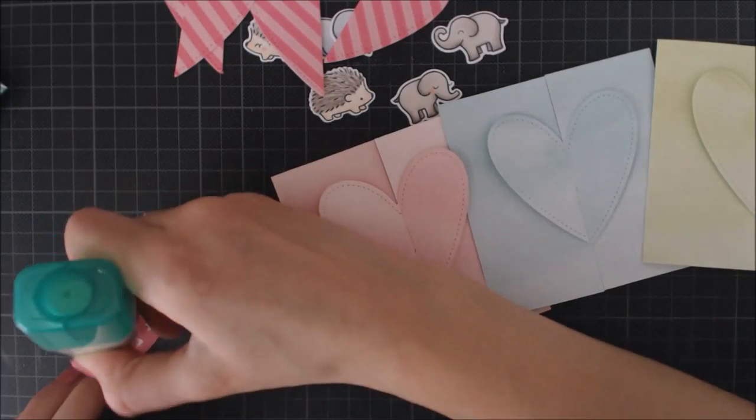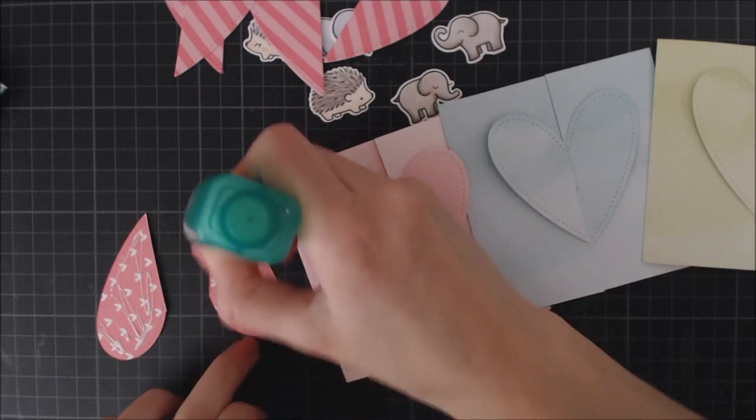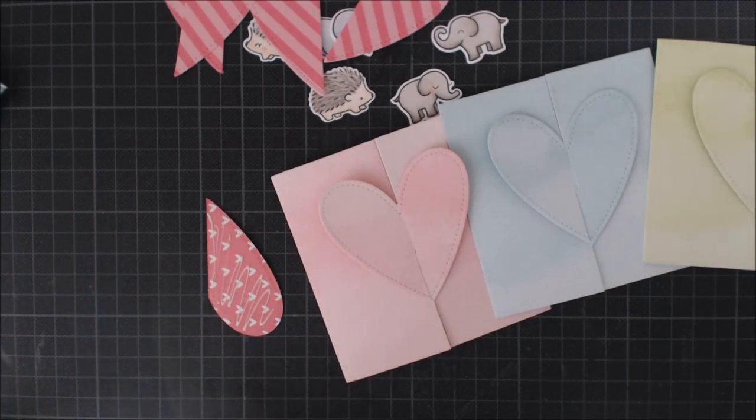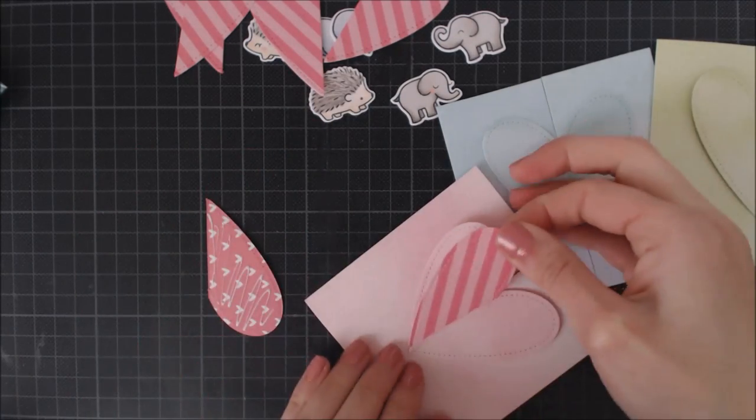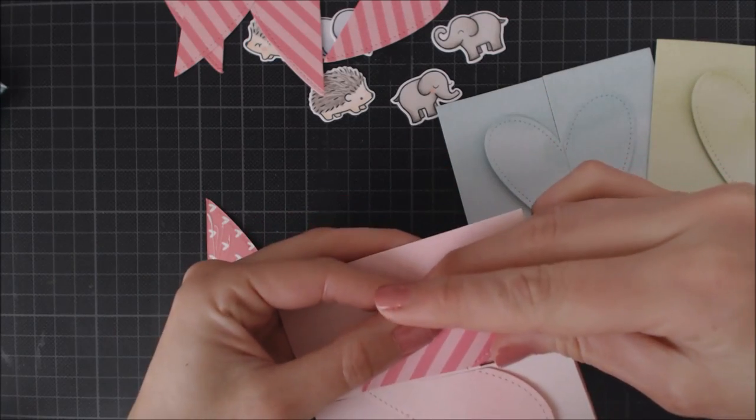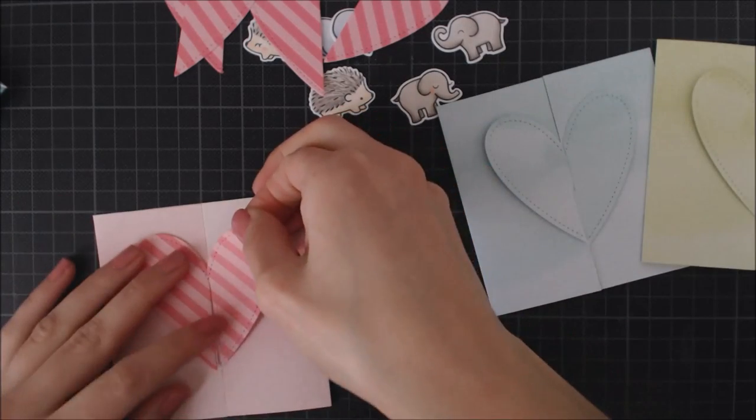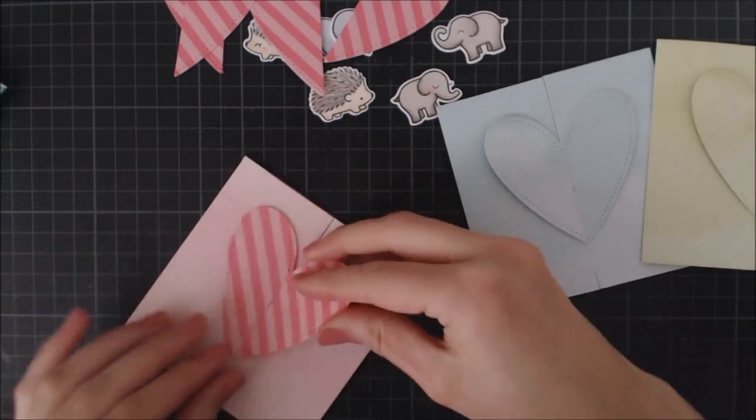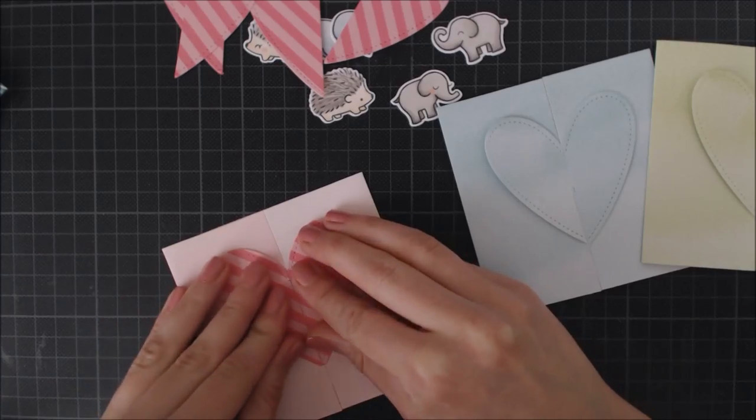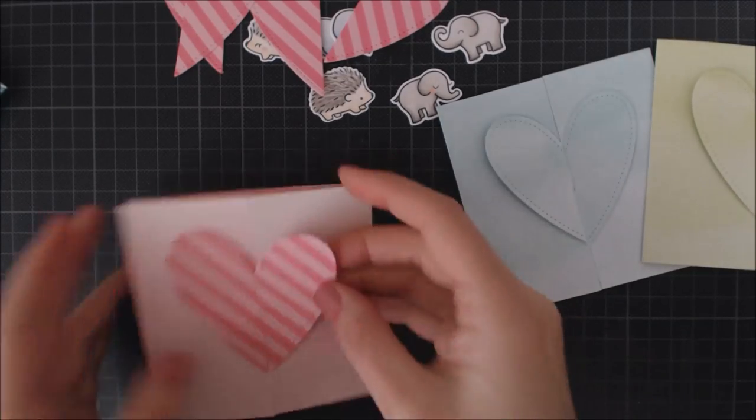I just cut them in half with my trimmer and I'm going to add them to my cards using some liquid adhesive. This kind of adhesive is great for this because it lets you play around a bit with the pieces until it's dry. So I can arrange both halves of the heart until they look nice.